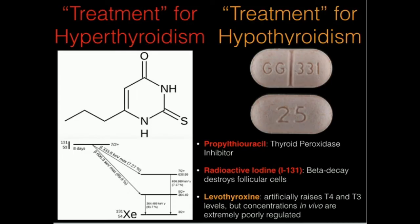Thyroid function is very prone to homeostatic imbalances, particularly in the United States. Either hyperthyroidism occurs — too much thyroid hormone — or hypothyroidism — not enough. For hyperthyroidism, a less severe treatment is propylthiouracil, an inhibitor of thyroid peroxidase, which reduces hormone production. A more severe treatment is radioactive iodine. Since the thyroid gland is essentially the only cell type that intakes iodine, the radioactive iodine is taken up there.